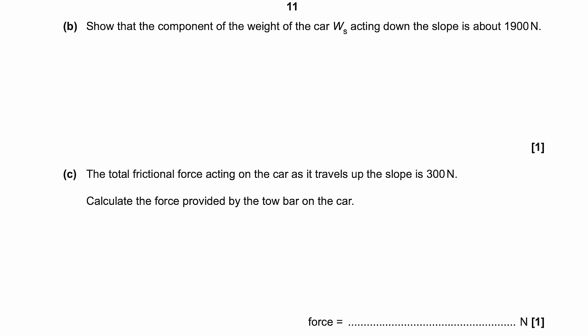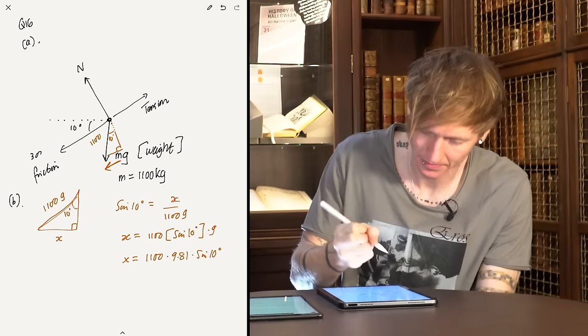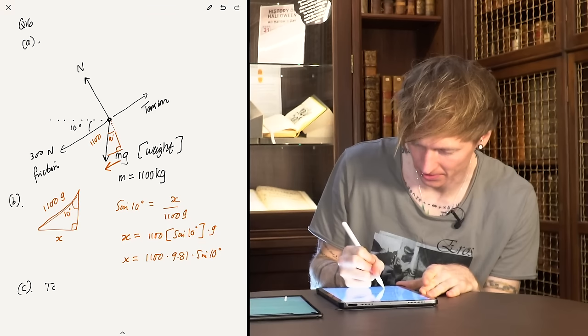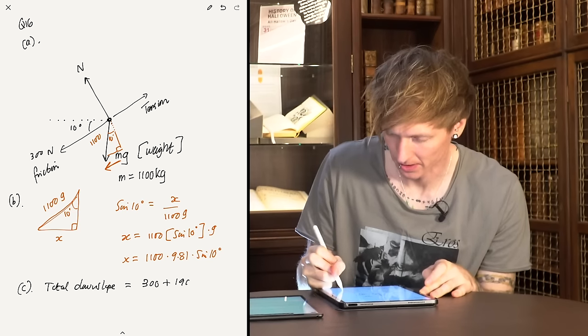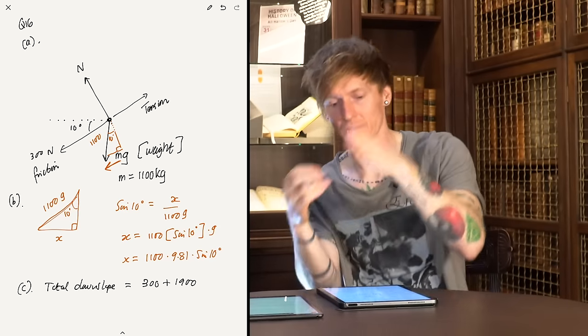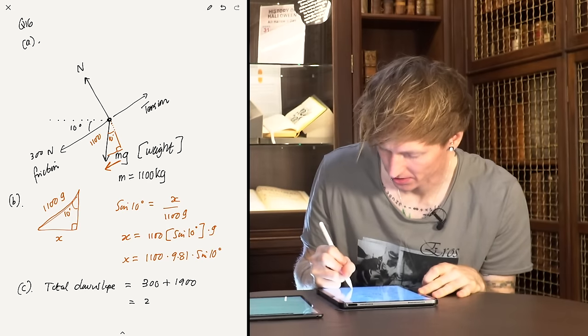Now we've got a question about the total frictional force acting on the car, given as 300 Newtons. So that's 300 that way — labelling the diagram is really important. Calculate the force provided by the tow bar on the car. I think I know the answer: we've got 300 from friction plus 1900 for the weight component. The reaction force and other component of weight are perpendicular, so they don't affect it. That's going to be 2200 Newtons. It said constant speed, right? So there's no acceleration, and the total force has to be zero. So the tow bar force is 2200 Newtons.